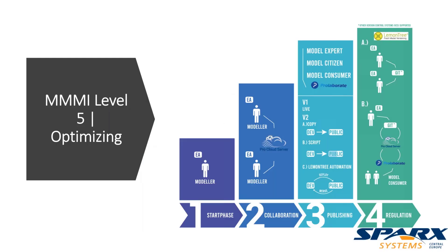To wrap up: I have currently identified four levels of maturity. I think there is a Level 5 — Optimizing — which is the same as CMMI Level 5: optimizing your process, having more automation, having verification of whether people are doing the right things in the model, getting notified automatically rather than waiting for big peer reviews. I think it's a nice approach. Consider where your organization is at the moment: are you still on a single user? Do you have a central database? Are you thinking about publishing? Are you in a regulated environment? Everything has its right to exist. Please share your thoughts — I'm happy to answer your questions in the team session.